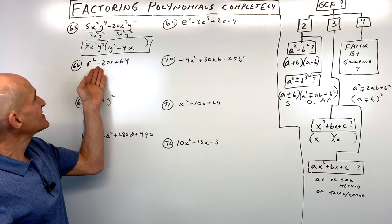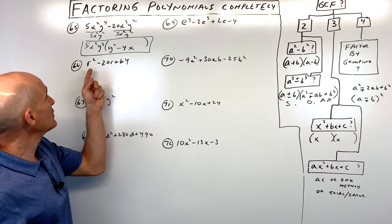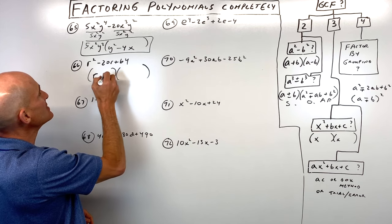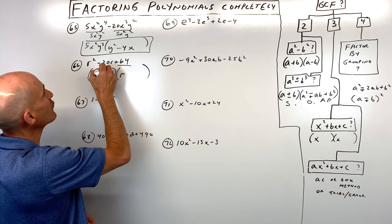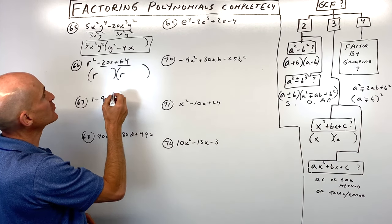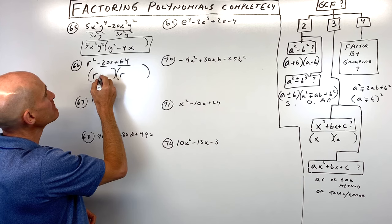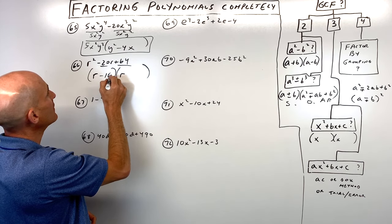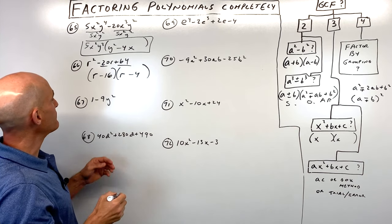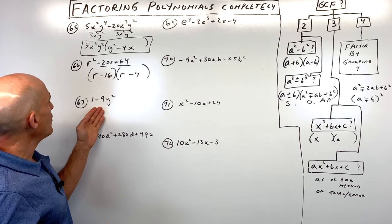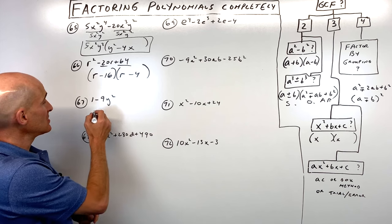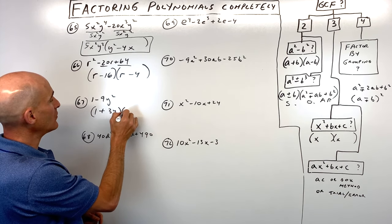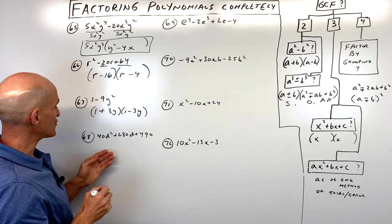Number sixty-six is a trinomial with leading coefficient 1. What multiplies to 64 but adds to negative 20? That's negative 16 and negative 4. Number sixty-seven is a difference of two squares, factoring as 1 plus 3y times 1 minus 3y.